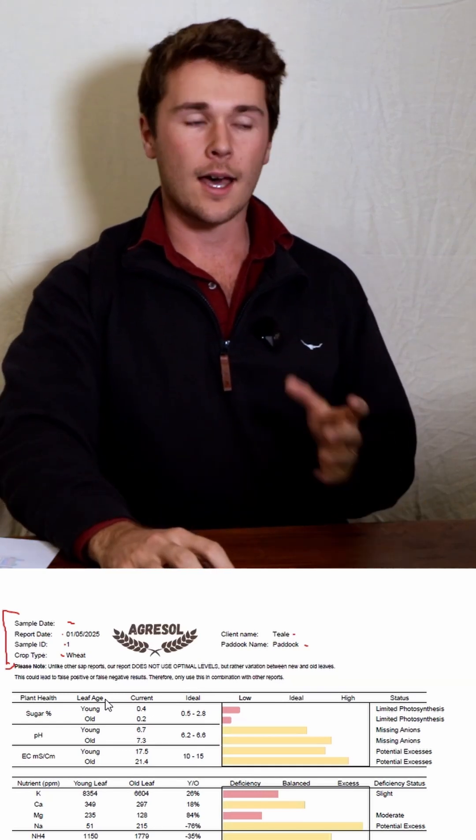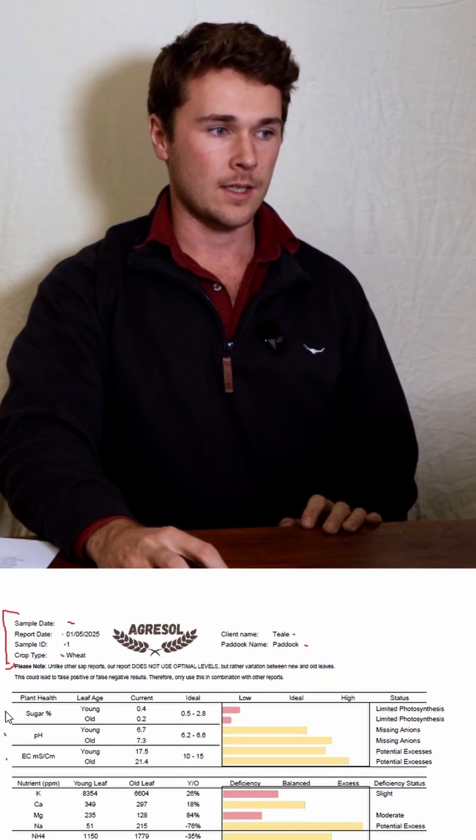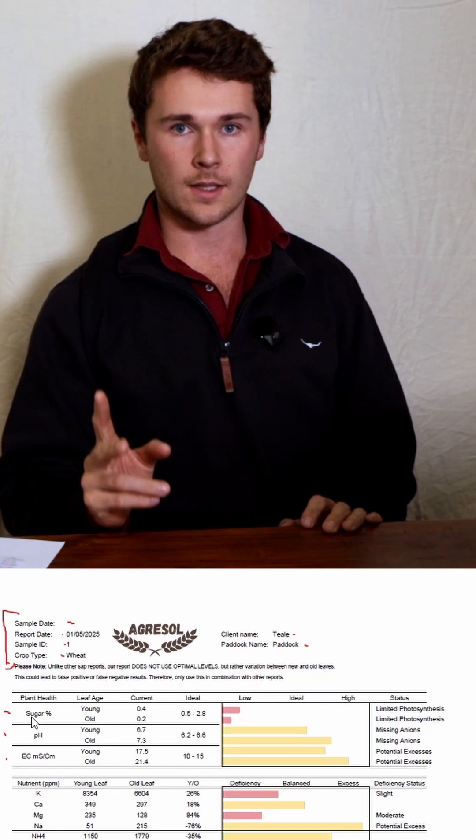The first three plant health measurements are sugar percentage, pH, and EC. Sugar percentage gives us a good understanding of two things: